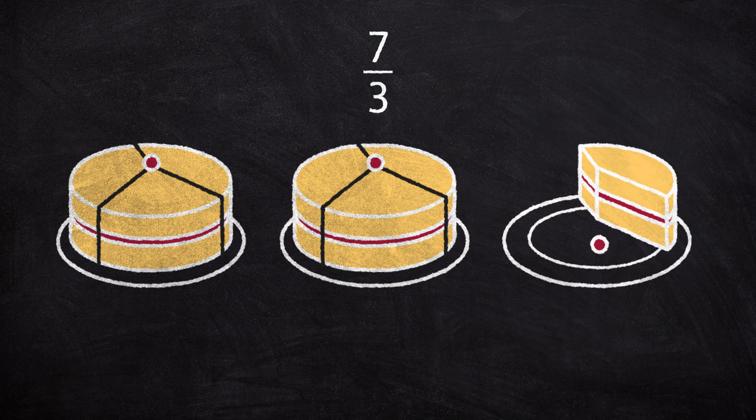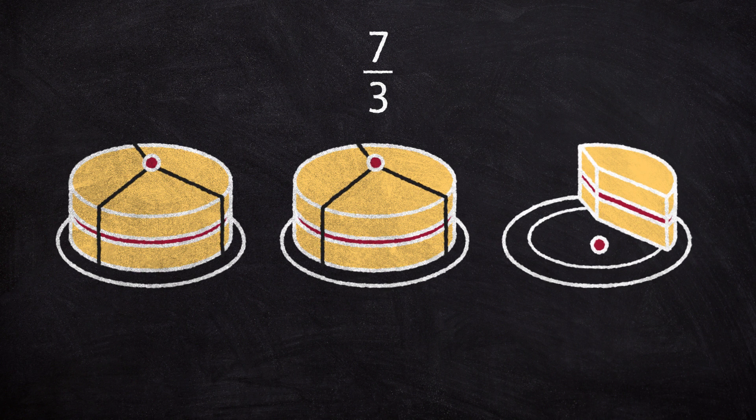Improper fractions can also be shown as mixed numbers. The cakes can be described as 7 thirds or as 2 wholes and 1 third.